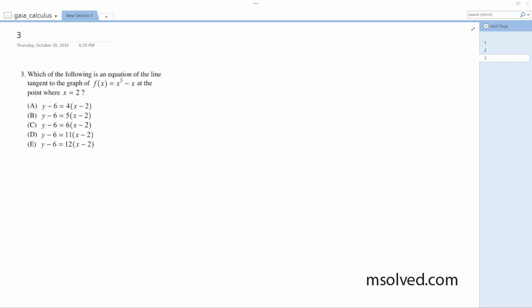All right, we want to find the tangent line of the given equation at the given point. So what I'm gonna do here is first I'm gonna find the derivative. f'(x) of x³ is going to be 3x² minus 1.